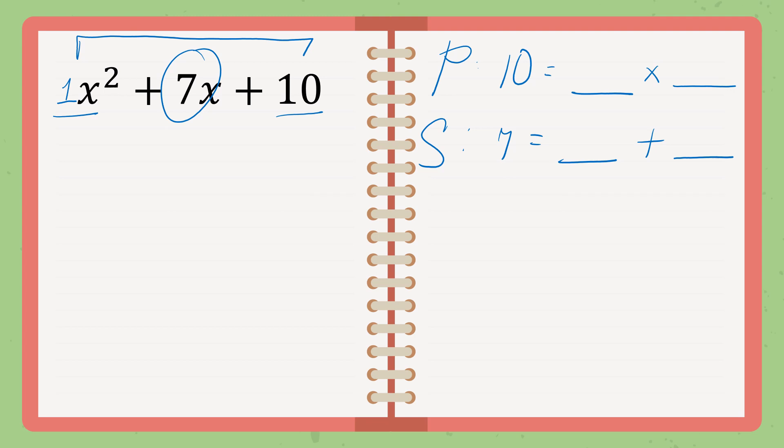So first, factor out 10. What are the factors of 10? So we will have 10 multiplied by 1. The answer is 10. We also have 2 multiplied by 5. The answer is 10. Now, add them. 10 plus 1, and 2 plus 5. 10 plus 1, it is equal to 11. 2 plus 5, the answer is 7. We got it.